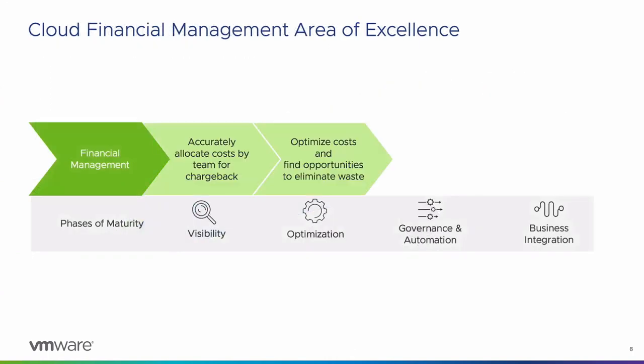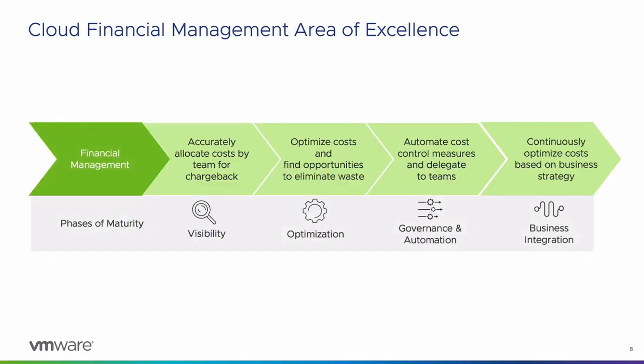Focusing on just the financial management piece — the FinOps side — this means being able to accurately identify costs and usage for showback and chargeback, identifying areas of optimization, automating cost control measures and delegating actions to teams so that when they sign in they see their data and can make informed decisions, and continuously optimizing costs based on your overall organizational objectives.